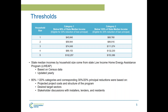For the Mass Solar Loan Program, similar to California, we have a household size-based model with two different eligibility categories: 80% or below and 120% or below state median income. We use purely state median income rather than area median income. Within each category the level of support provided is different.